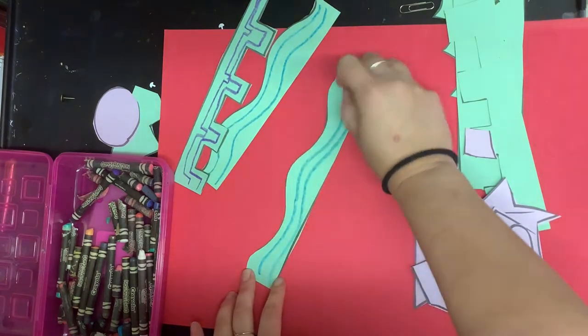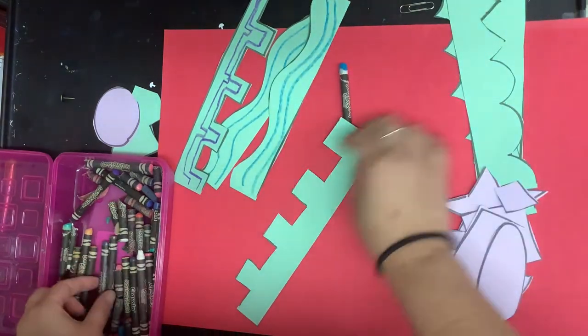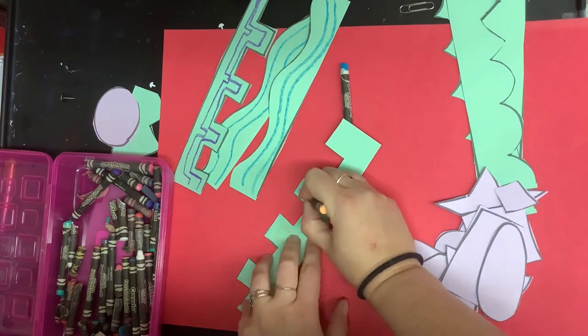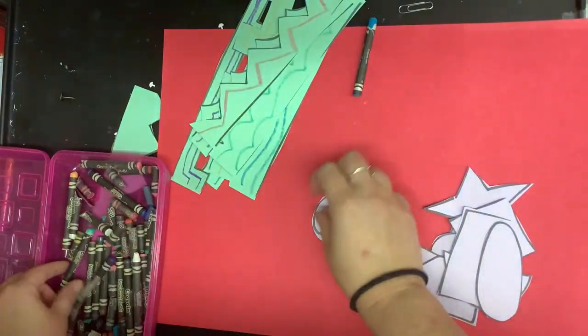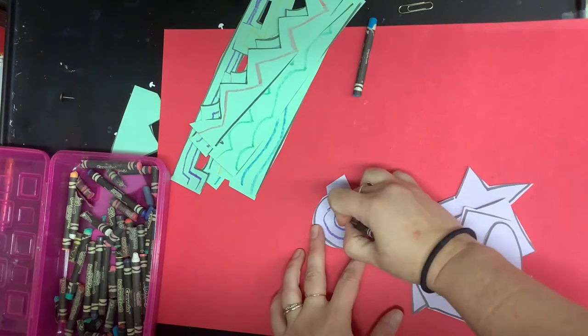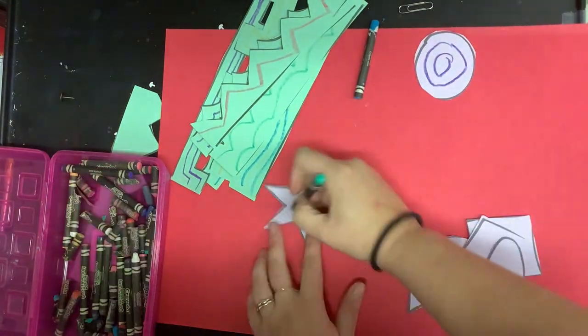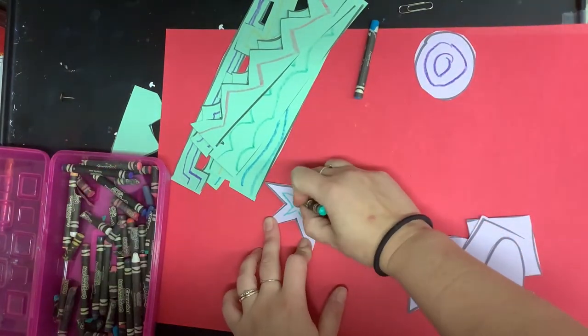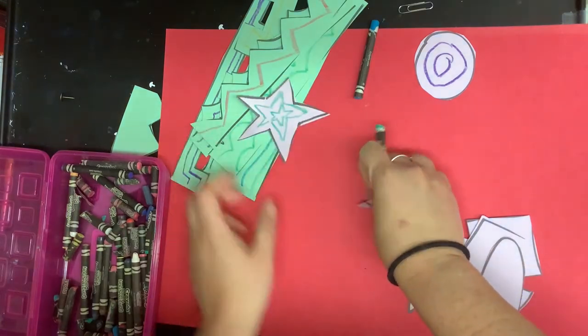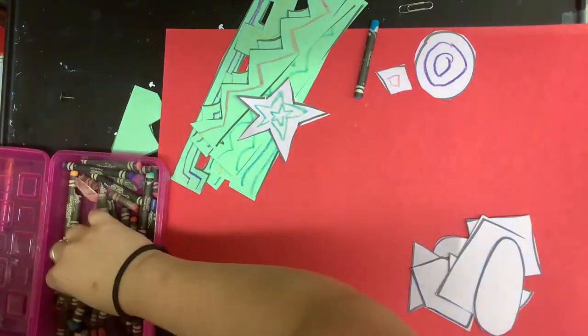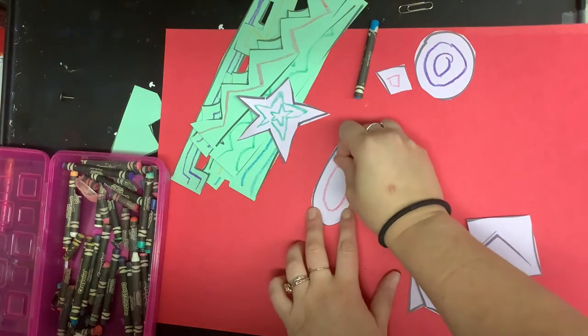After I finish that then I'm going to move on to my shapes and I'm going to trace the shape of my shape on the inside. So you can see I just did my circle and now I'm tracing the shape of my star and I'm going to go through and I'm going to do that for every single one of my shapes.